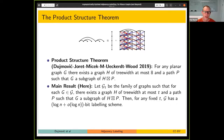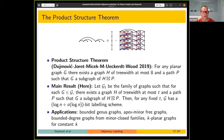This works because of a theorem from last year's conference: every planar graph is the strong product of some graph H of tree width at most 8 and a path. The main result is about strong products and subgraphs of these strong products. If you have a family of all subgraphs of this kind of strong product, you get a log n plus little-o(log n) bit labeling scheme. This applies not just to planar graphs, but also to bounded genus graphs, apex minor-free graphs, bounded degree graphs from minor-closed families, and k-planar graphs for constant k.